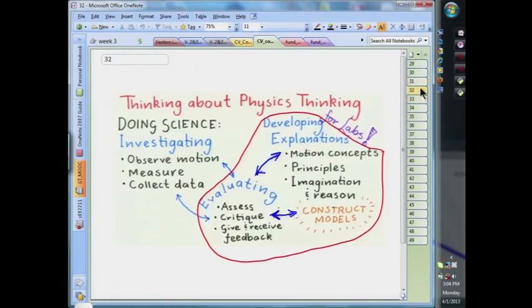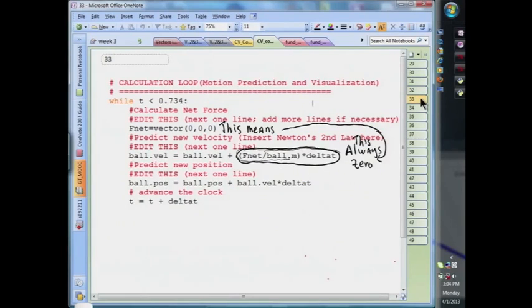We can also apply this evaluation process on the developing explanation side, in this case, to refine our understanding. Looking at our computer model, we notice that a change in the velocity, the second term on the right-hand side of Newton's second law, is always zero, because f net is zero. So we see that, in fact, the object's mass, in this particular case, plays no role in the prediction.